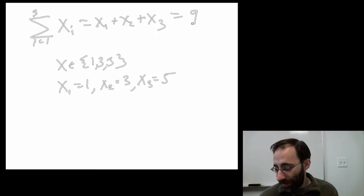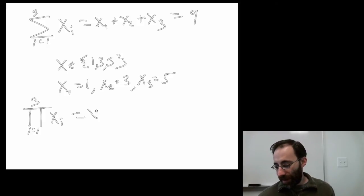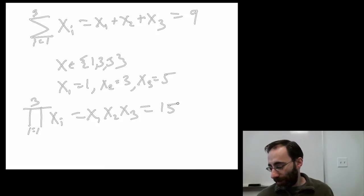You can do the same thing with a product. That's a capital pi. It means product. These are chosen for a reason. The Greek letter sigma is like an S, so a capital sigma stands for sum. Pi is like a P, so a capital pi stands for product with a P. It's the exact same notation. This means multiply all the xi's together. That's x1 times x2 times x3. And again, this notation is all in the book as well in the first chapter. In that case, it would be 1 times 3 times 5, which is 15.